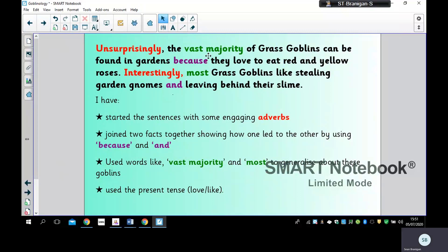And then finally, I've added some generalizers. Now we have looked at generalizers before when you were writing about your aliens. So I've used the vast majority, which means nearly all of them. And most again means nearly all of them. And I've also written in the present tense as if it's happening now.